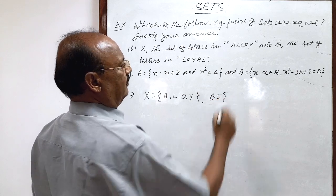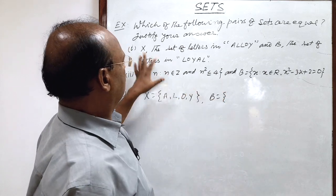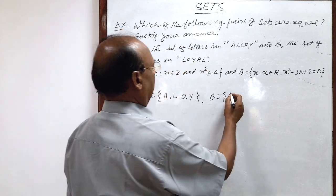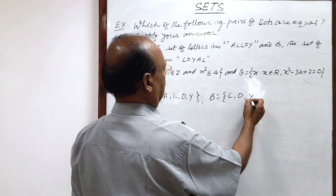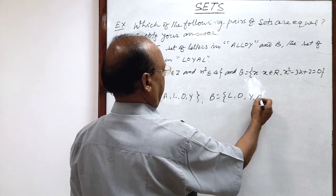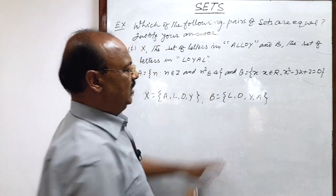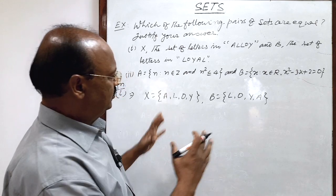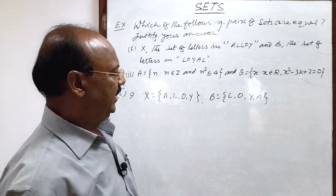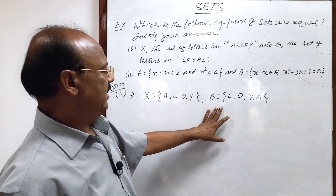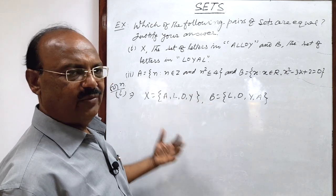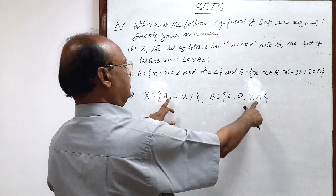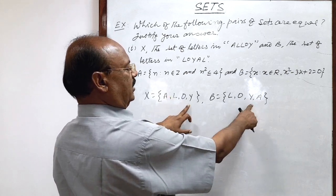And set B has elements from LOYAL: L, O, Y, A. Again L is there, but we will not write it again since we have already written L here. So now just observe these two sets and what we find: we find that both the sets X and B have same members, same elements, same number of elements: A, L, O, and Y in both sets.